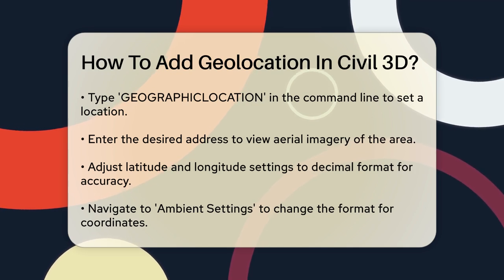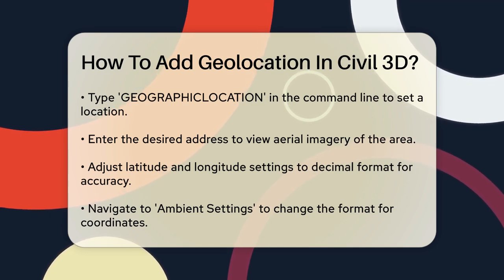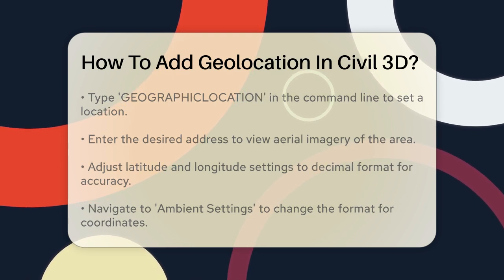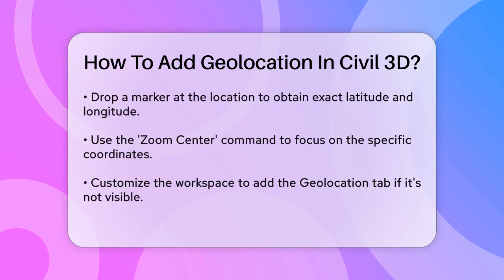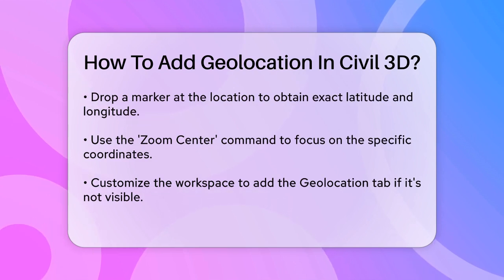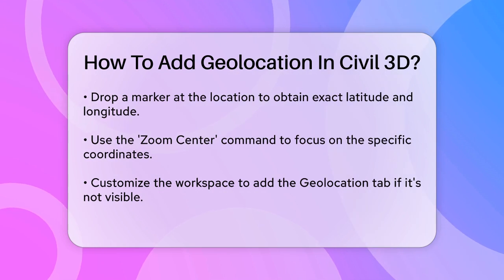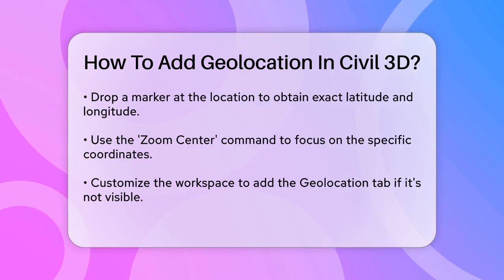Once you've entered the address, the tool will take you to that location on the map. You can then drop a marker to get the exact latitude and longitude coordinates. These coordinates can be copied and used to zoom into the exact location in your Civil 3D drawing using the Zoom Center command.